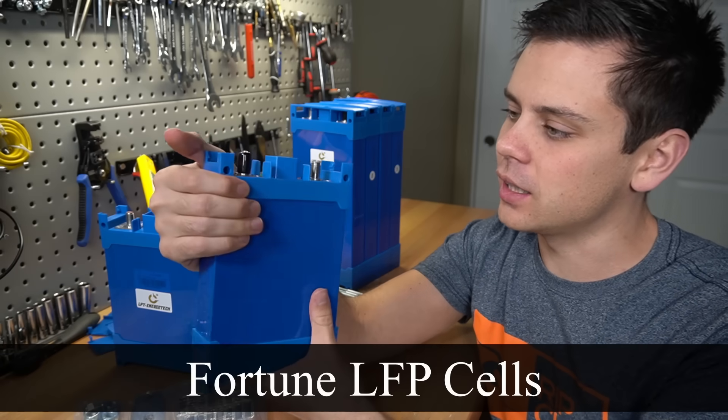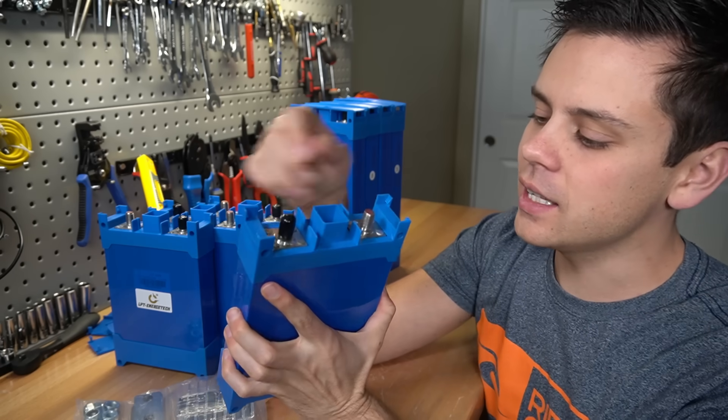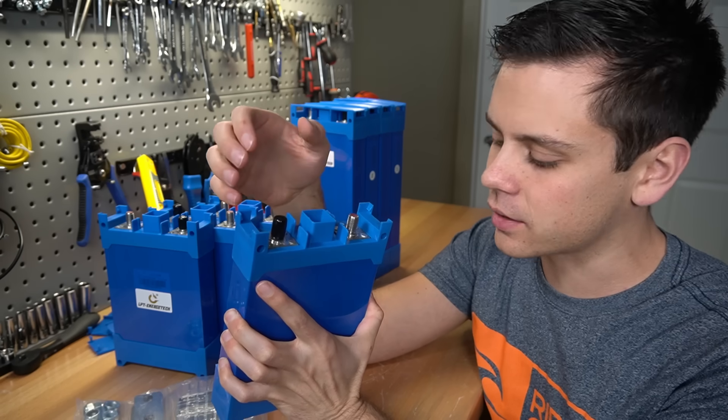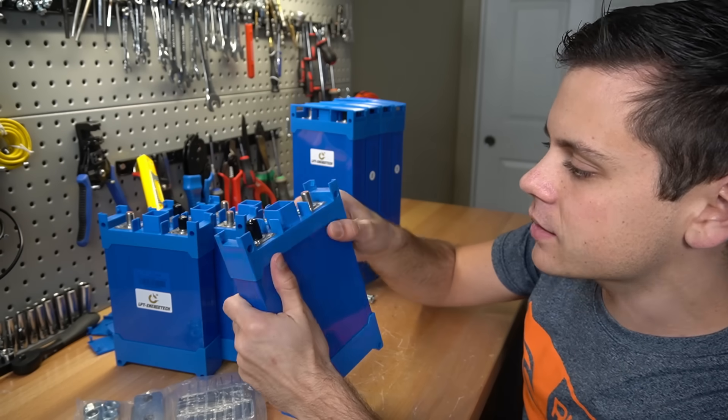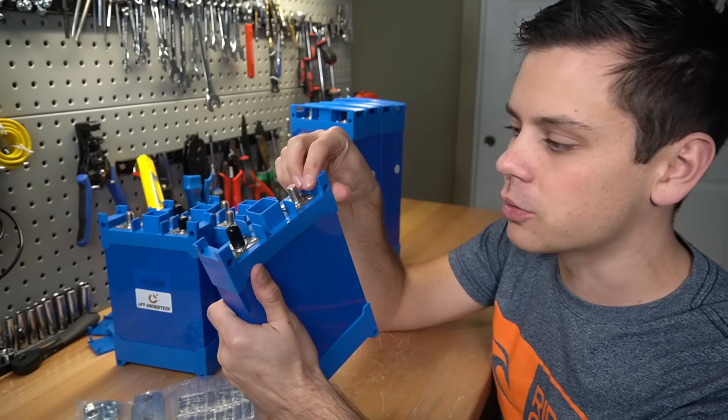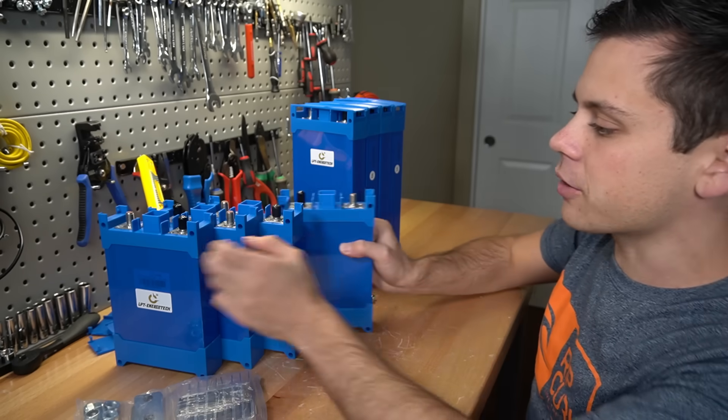They're called Fortune lithium iron phosphate cells and these terminals are so strong that you can use an impact gun. It also has a case where you can put your own threaded steel rod and make your own battery in minutes.